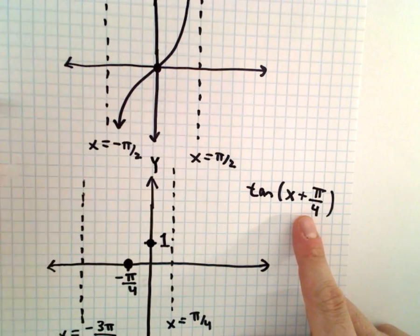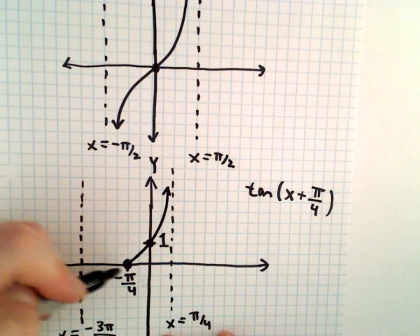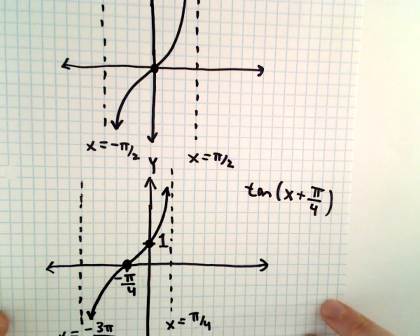On the y-axis, it'll be crossing at y equals 1, but then it still just has that same basic shape. And after that, it just keeps repeating.